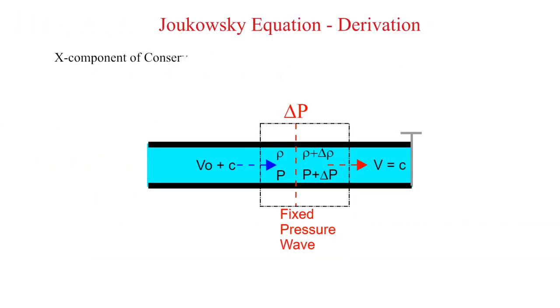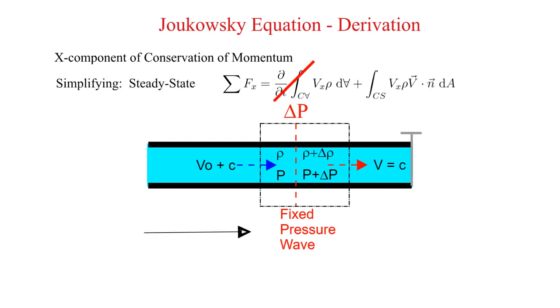We'll start with the x component of the integral form of conservation of momentum. Then we'll simplify. We are analyzing steady state so the time derivative goes away. For the left hand side of the equation, we identify the external forces. There are two. A pressure force on the left side is acting in the positive x direction. A pressure force on the right side is acting in the negative x direction. Next, we integrate the momentum flux over the inlet surface and the outlet surface. Due to the outward direction of the normal vector on each surface, the dot product for inflow is a negative sign and a positive sign for the outflow.